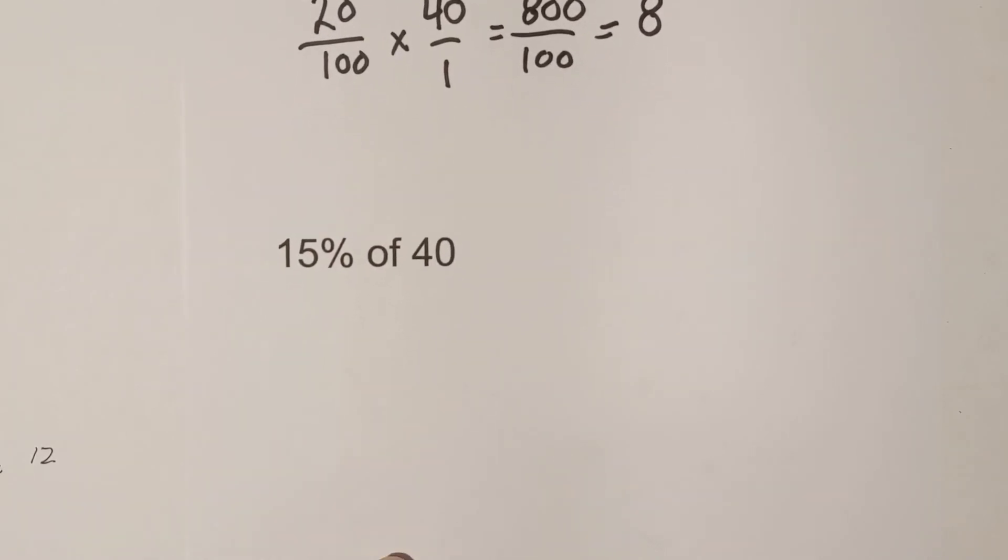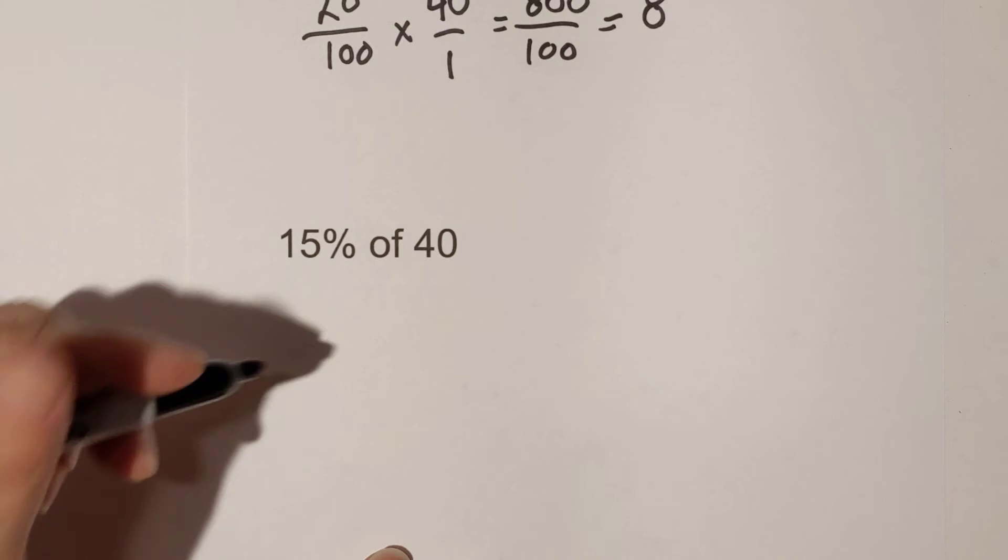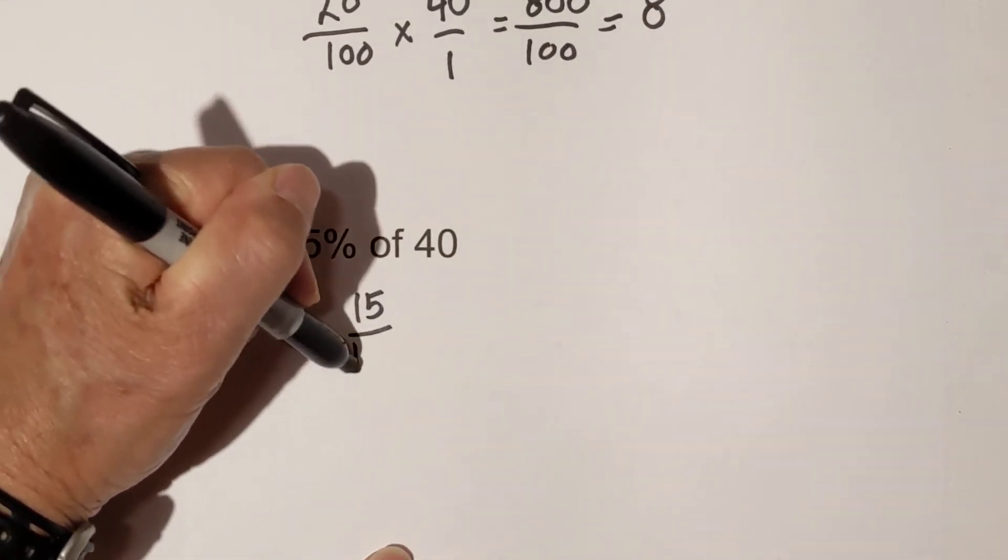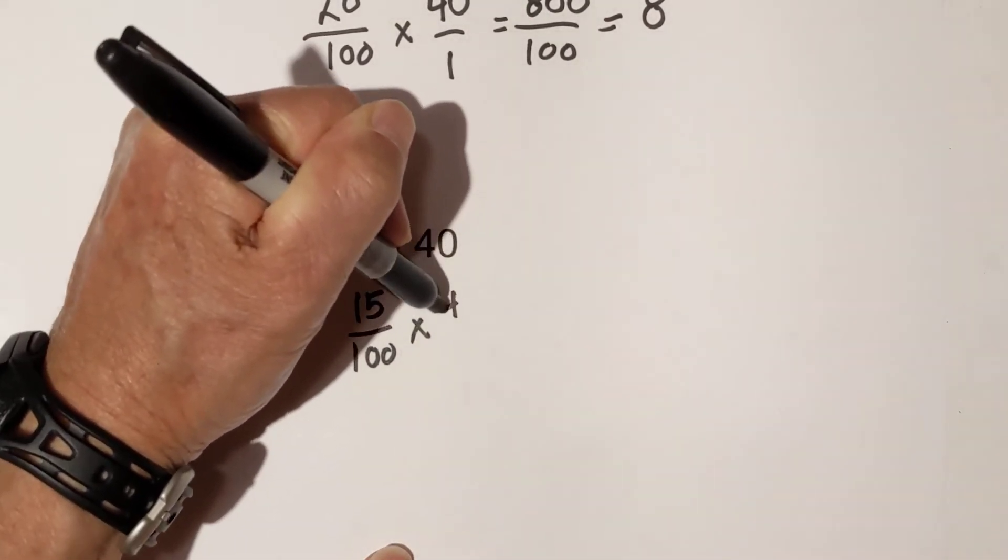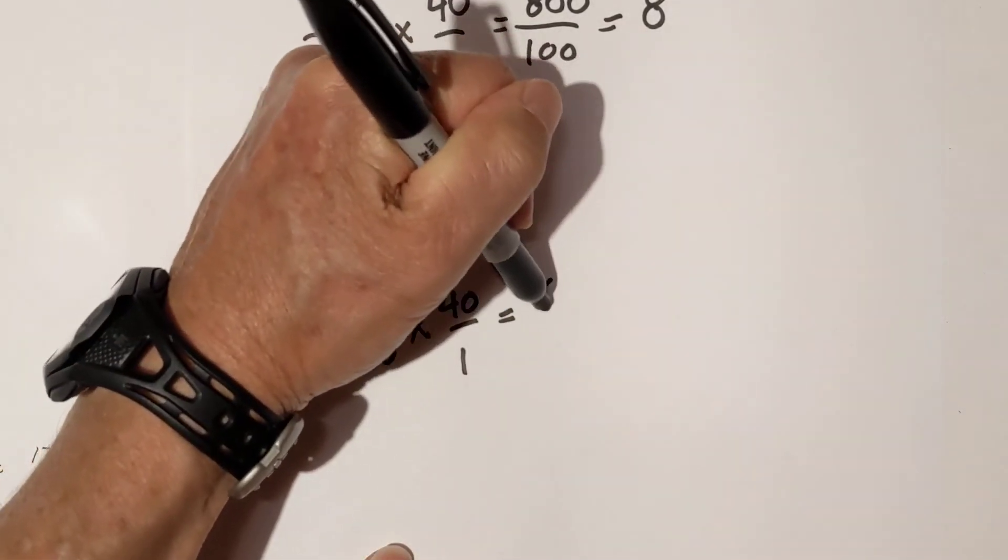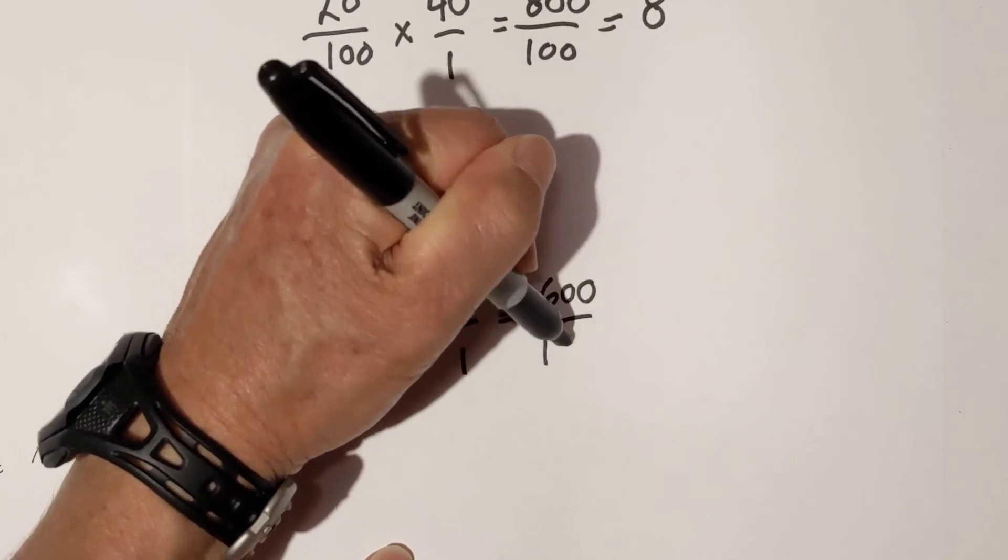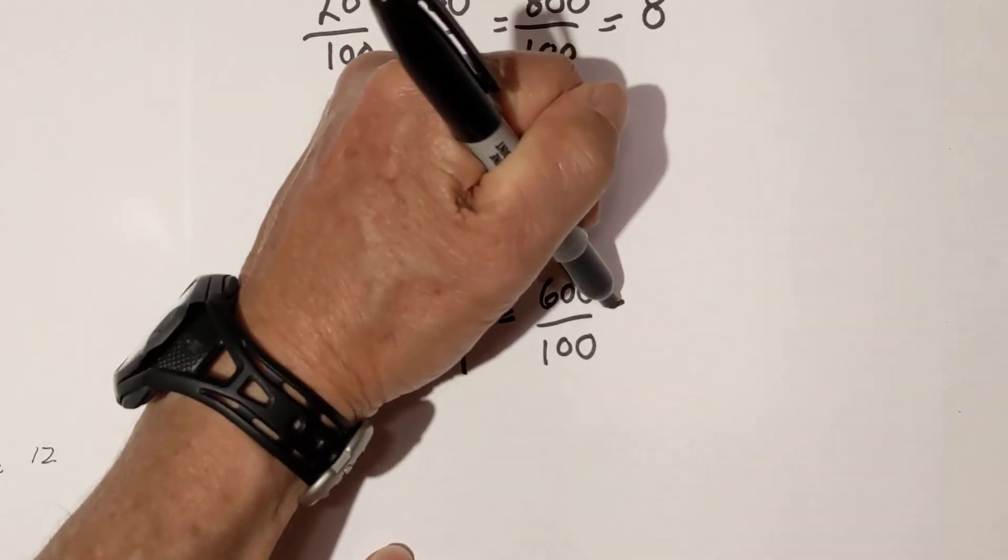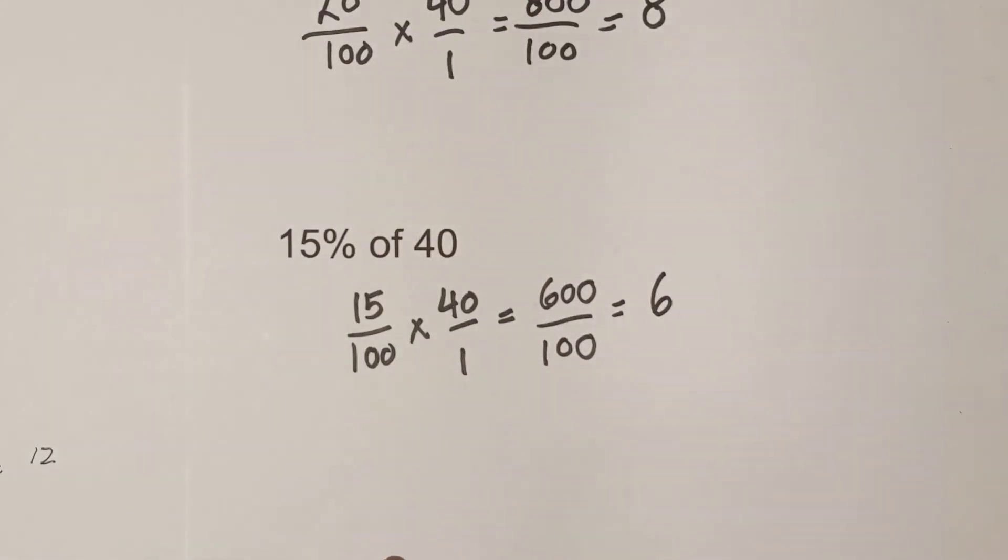How about 15% of 40? Again same thing. You're getting the hang of this. 15 over 100 times 40 over 1. 15 times 40 is 600 over 100. 100 times 1 is that and then that reduces to 6.